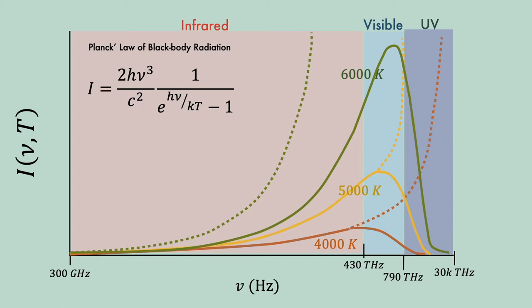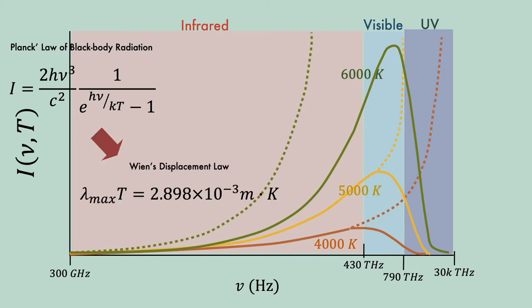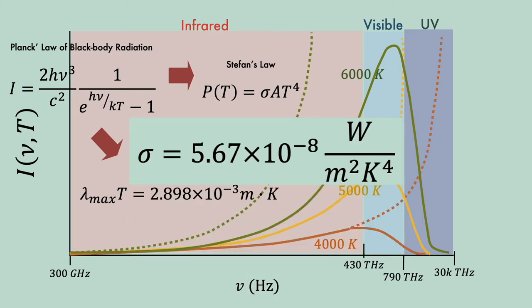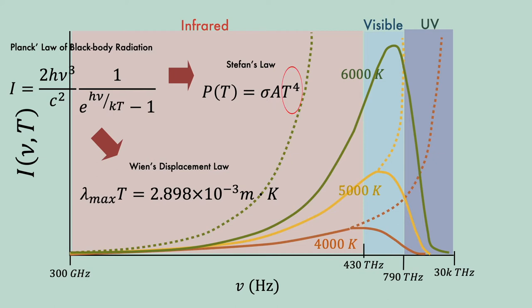From Planck's Law, we can derive Wien's Displacement Law and Stefan's Law. In Wien's Displacement Law, lambda sub max is the wavelength at which a blackbody radiates most strongly for a given temperature T. Stefan's Law allows us to calculate the total power of blackbody radiation emitted across the entire spectrum of wavelengths at a given temperature. In these plots, this power is represented by the area under the blackbody radiation curve. Here, sigma refers to the Stefan-Boltzmann constant, equal to 5.67 × 10⁻⁸ W/m²K⁴. A is the surface area of the blackbody and T is the temperature in Kelvins.